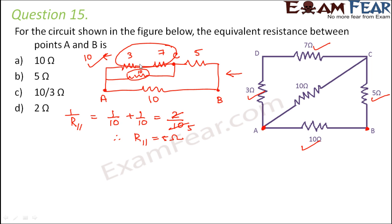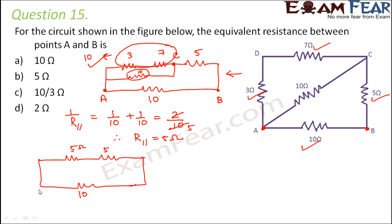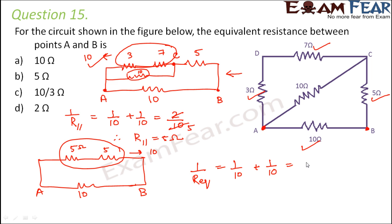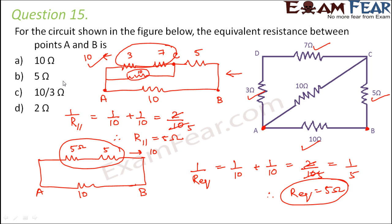Now this 5 ohm is in series with the remaining 5 ohm, making 10 ohms. This 10 ohm is then in parallel with the other 10 ohm: 1/R_equivalent = 1/10 + 1/10 = 2/10, so R_equivalent = 5 ohms. Therefore option B is the correct answer.